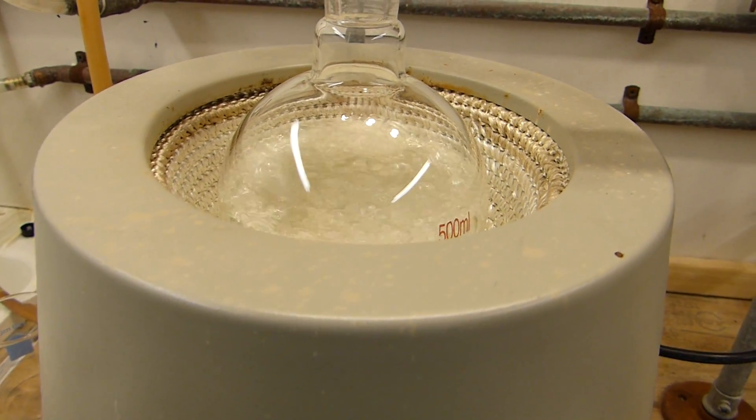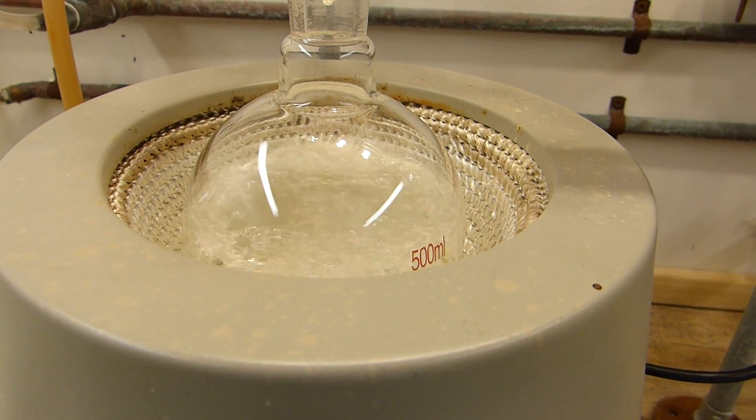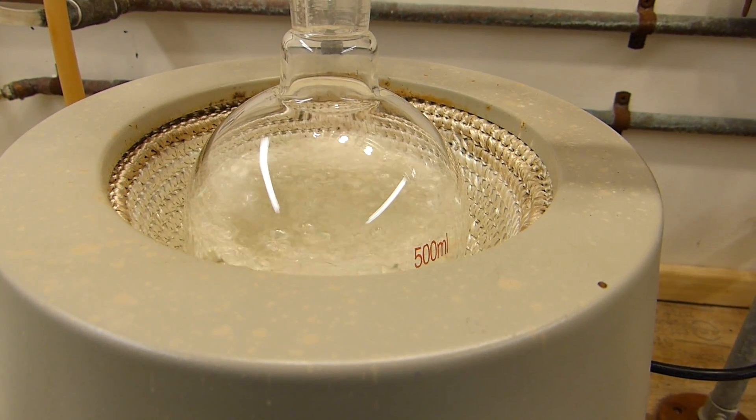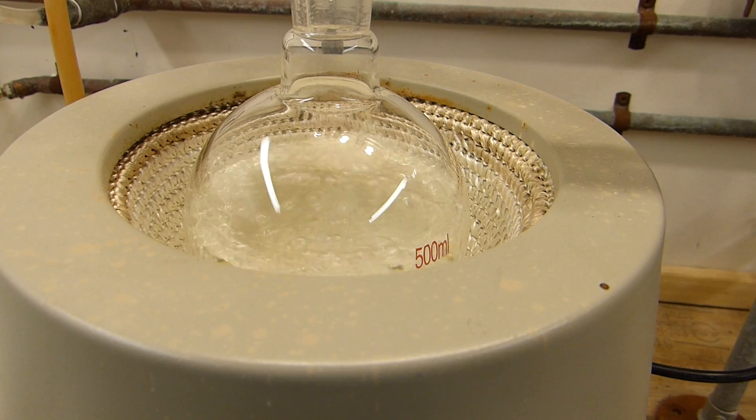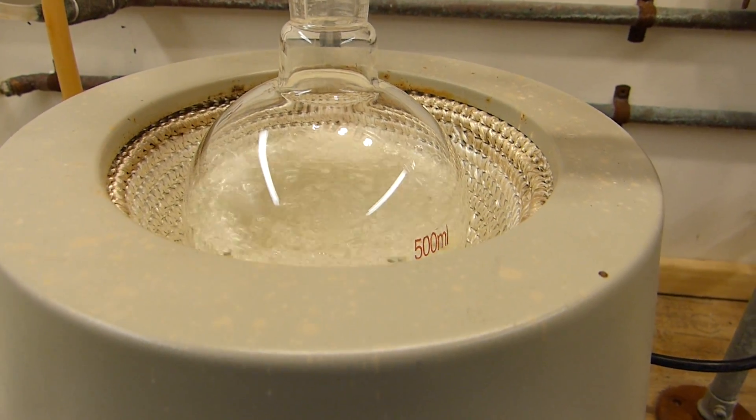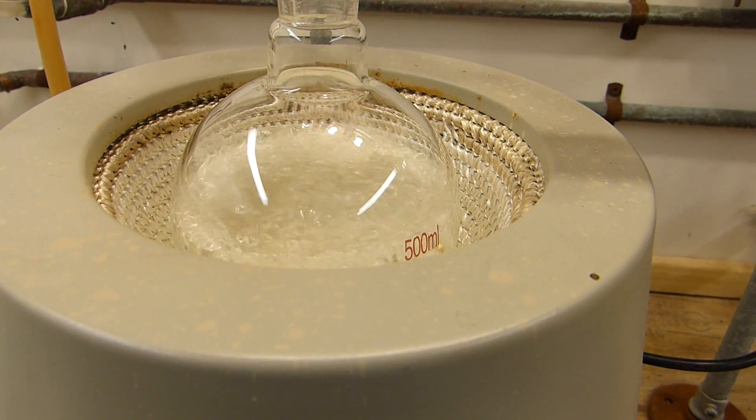We can pretty much distill to dryness on this one since we don't expect to form any explosive peroxides or anything and temperature isn't particularly hot so we're not gonna throw up the flask or anything. So right when it gets down to just a little bit I'll pull the mantle off and maybe the rest of it will still over, maybe it won't, but I don't plan to leave more than maybe 10 or 20 milliliters in there.